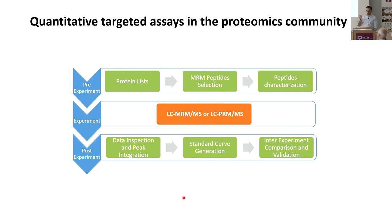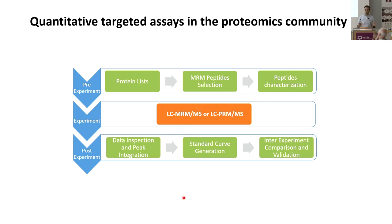This is more or less the overview. You have the pre-experimental step, the experiment, and then the post-experimental step. In targeted proteomics, we put a lot of emphasis on the pre-experimental step, contrasting it with normal bottom-up proteomics. We are really targeting specific proteins in advance, rather than going blind and trying to see what we want to see.